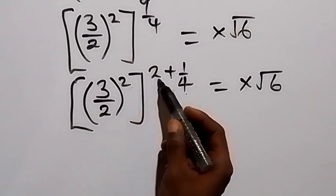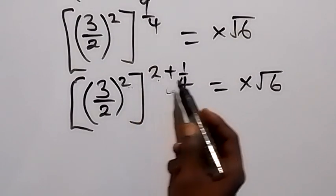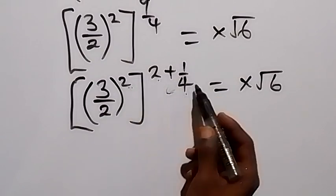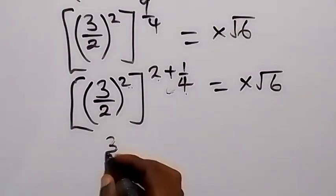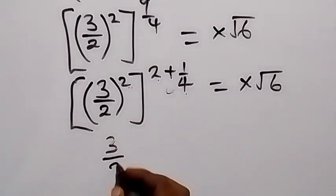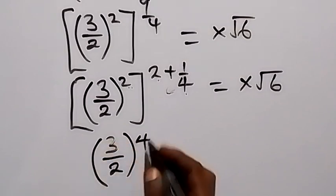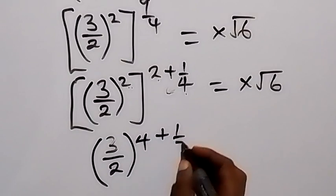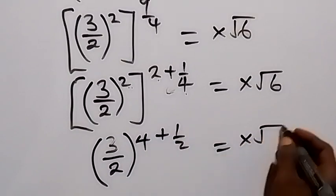From the law of indices these powers multiply each other. 2 multiplied by 2 gives 4, and 2 multiplied by 1 over 4 gives 1 over 2. So this power can be reduced to 3 over 2 raised to power 4, plus half, which equals x root 6.